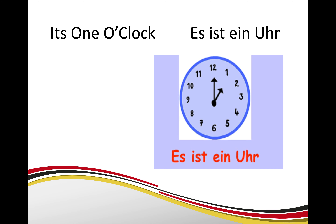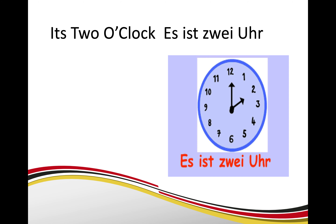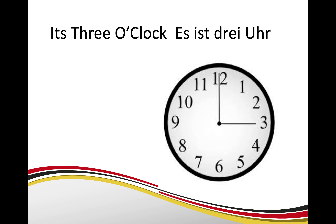It's one o'clock — es ist ein Uhr. It's two o'clock — es ist zwei Uhr. And then we go: drei Uhr, vier Uhr, fünf Uhr, sechs Uhr, sieben Uhr, acht Uhr, neun Uhr, zehn Uhr, elf Uhr. It's three o'clock — es ist drei Uhr.